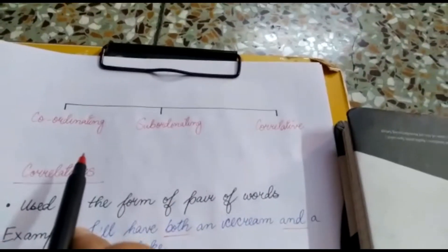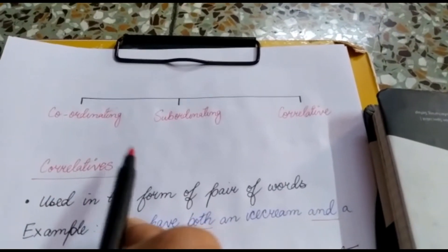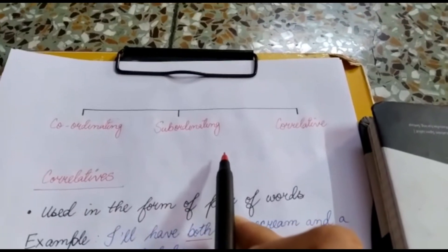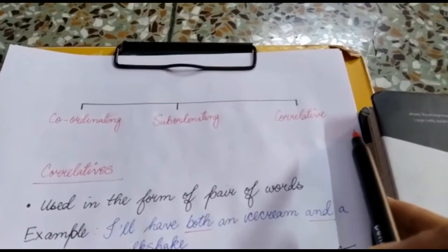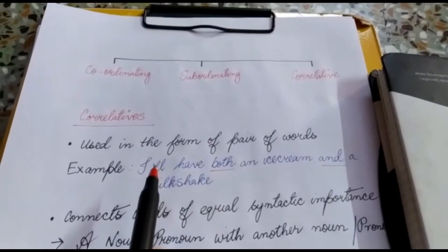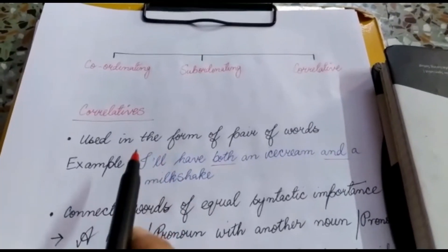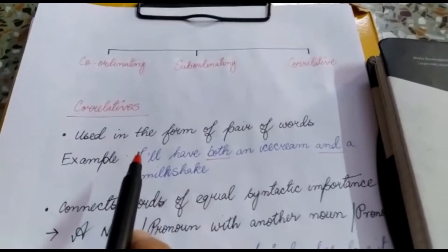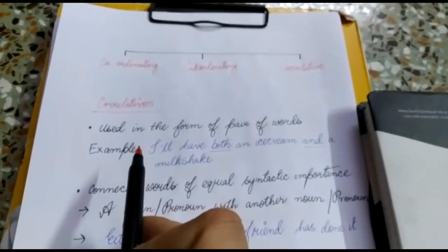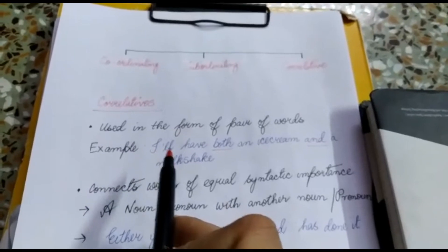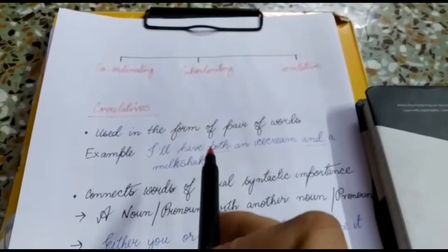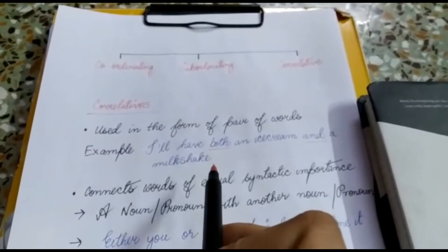Conjunctions are mainly of three types: coordinating conjunctions, subordinating conjunctions, and correlative conjunctions. In this video, I am going to focus only on the correlative conjunctions. Correlative conjunctions are used in the form of a pair of words — in other words, correlative conjunctions are always used together in a sentence.